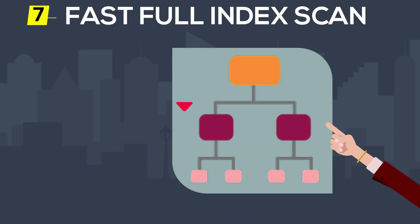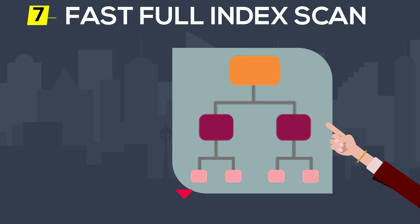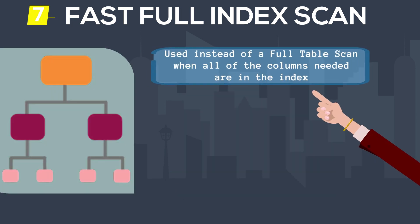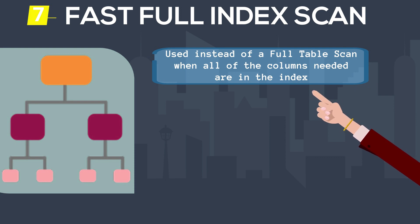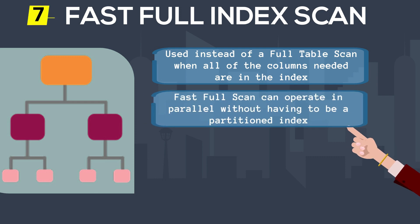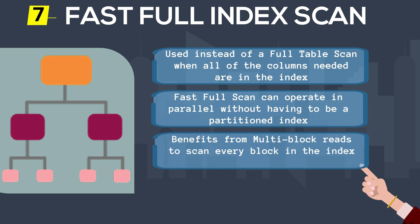A fast full index scan, on the other hand, does read all of the blocks in the index and is effectively a replacement for a full table scan. Instead of reading all of the blocks in the table, you read all of the blocks in the index because that index has all of the columns needed to answer the query. This is the only index access path that can be done in parallel — a fast full index scan does use multi-block read and can be executed in parallel.